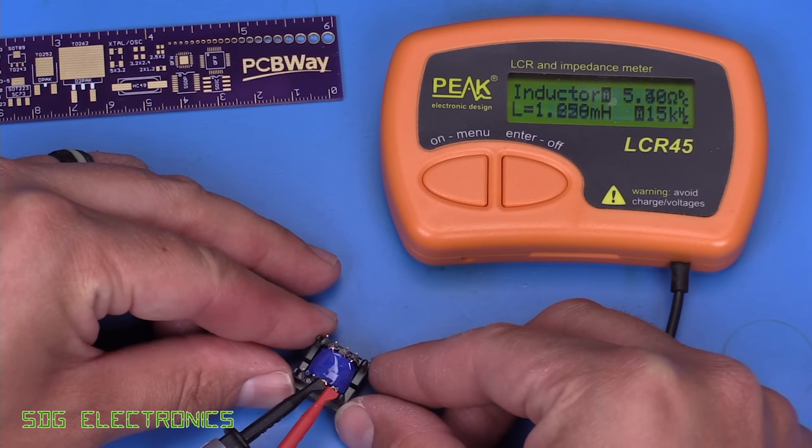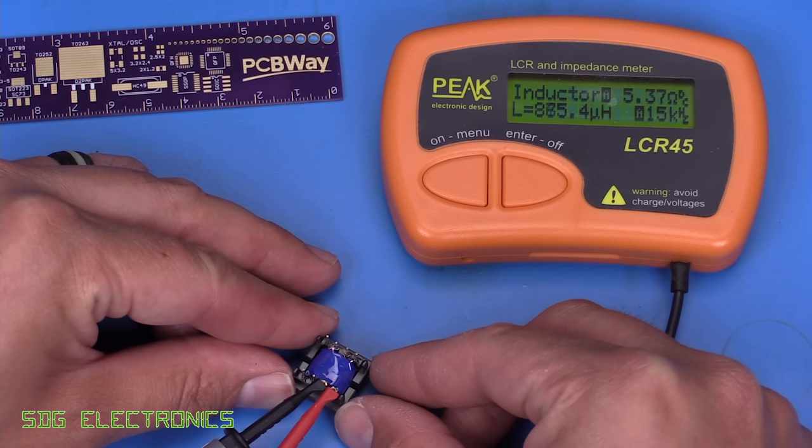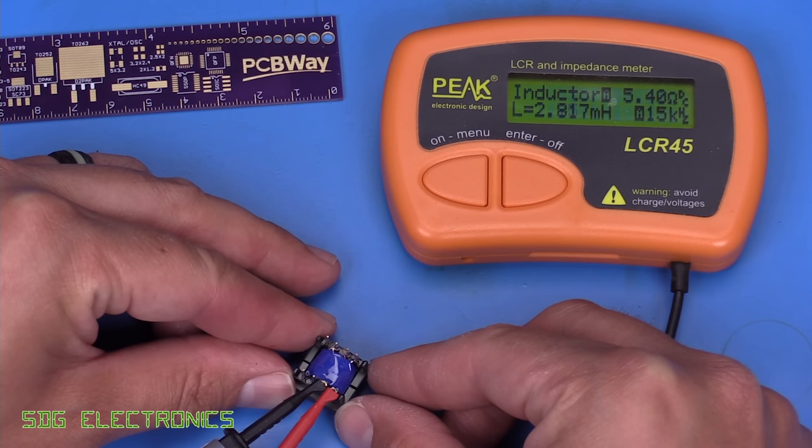So if I increase the gap, you can see the inductance going down, down, down, down. And if I change the gap so it's tighter, the inductance goes up.